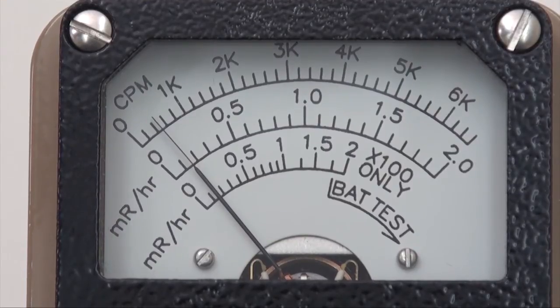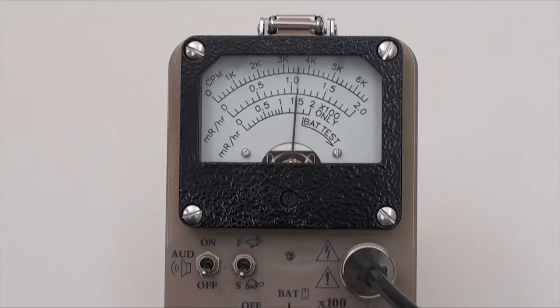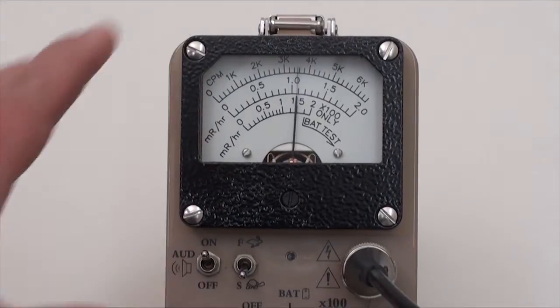Since this meter face simultaneously presents another scale for exposure using milliroentgens per hour units, the calculated exposure is 1.5 mR per hour. Other switches include an audio on-off switch.